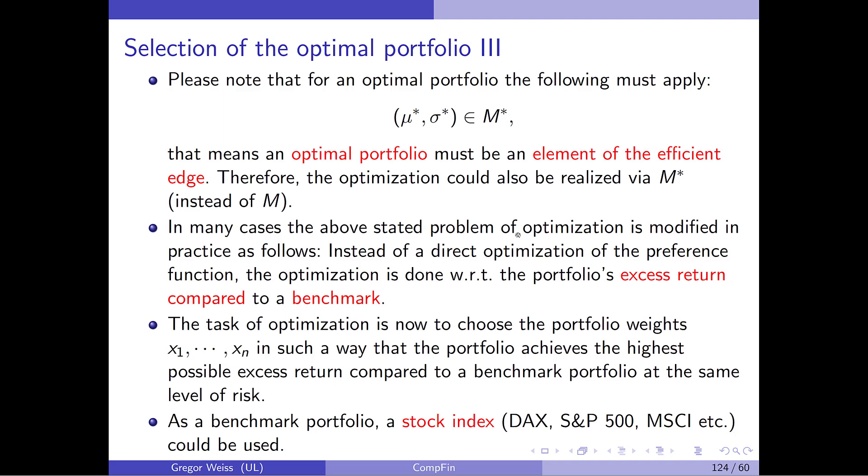Now, please note that actually we shouldn't optimize over the set of all feasible portfolios, but actually we should only consider those portfolios, mu star, sigma star, that form part of the set of efficient portfolios. So the optimal portfolio should be on the efficient frontier. So actually the optimization should be realized via m star and not m. In many cases, this above stated problem of optimization is modified in practice. Because actually in practice, you have a lot more constraints. And even if you don't have a preference function with a risk aversion parameter, you still have optimization with respect to an excess return. You want a certain return that goes beyond the return of the S&P 500 or MSCI World Index. So this is the first thing you can do. You can try to optimize with respect to a benchmark.